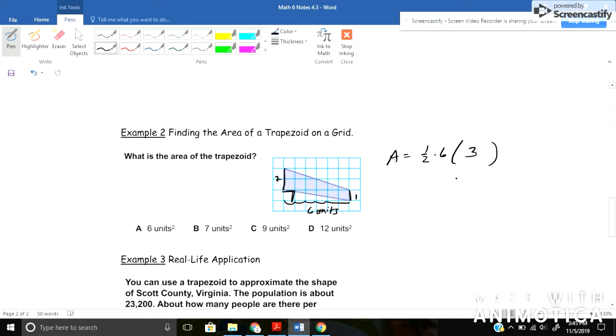All right, so area equals half times my height times the bases added together. Well two plus one would be three, so six times three is 18, and then half of 18 will give me nine. So the correct answer would be letter C.